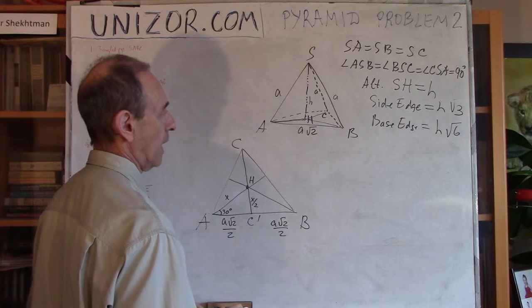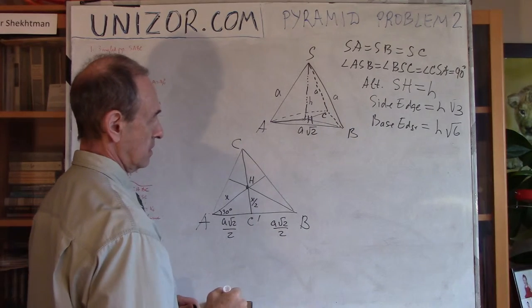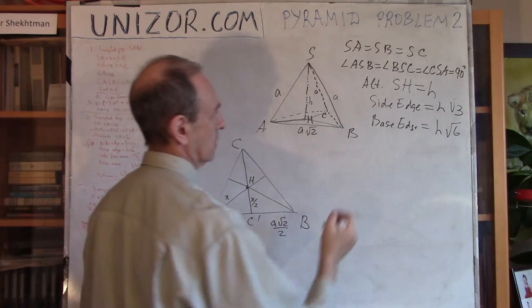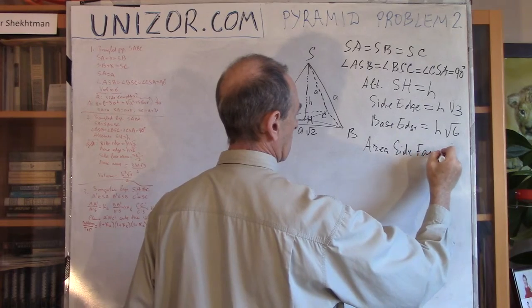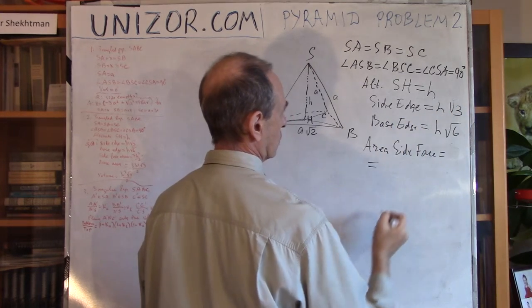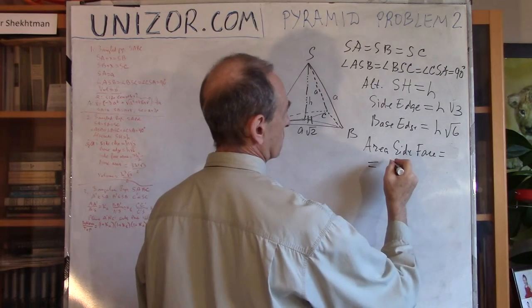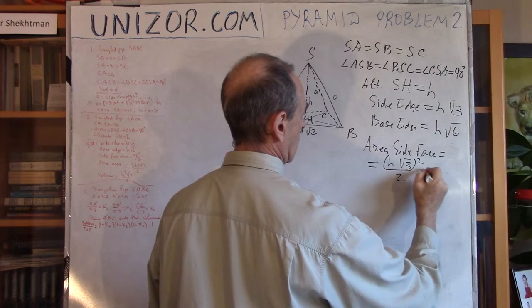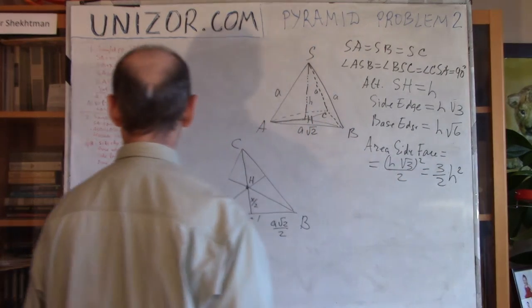Now the areas. The area of the side face is easy because it's a right triangle with catheti A and A, so the area is A²/2 = (H√3)²/2 = 3H²/2.